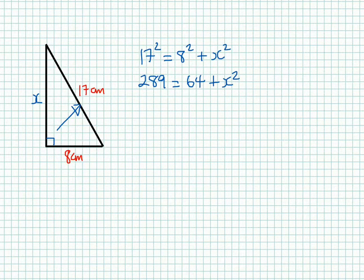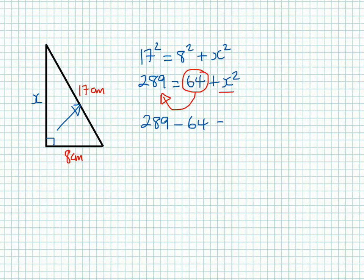Now what I need to do is remove this 64 from here. I want it on this side of the equal sign, because I need to have x by itself. So my next step now would be to have my 289 - 64 is equal to x². I know it's going to be minus because it was adding here, and I will do the inverse operation to get rid of it, which is subtract.